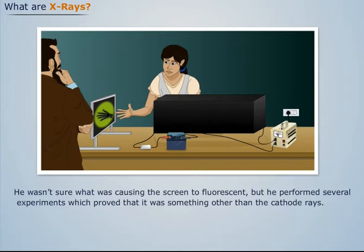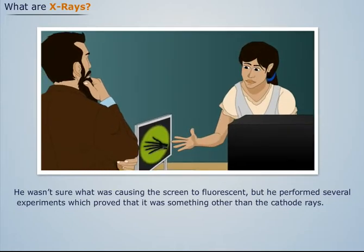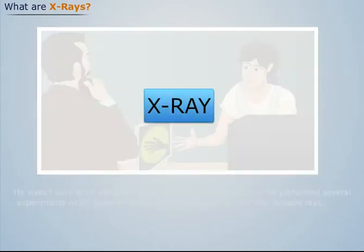He wasn't sure what was causing the screen to fluoresce, but he performed several experiments which proved that it was something other than the cathode ray. Since the nature of this new radiation was mysterious, Roentgen named the rays X after the mathematical symbol for the unknown.